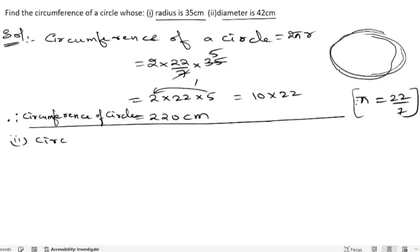For this, the formula will change. Circumference of a circle - the formula for if they have given the diameter means we will take πd. So πd, what is pi? 22/7.